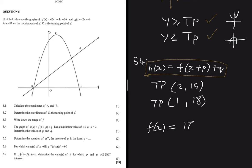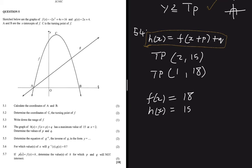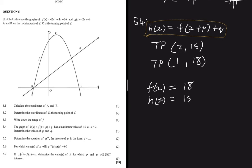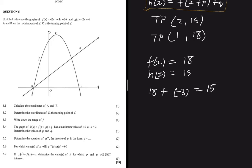The turning point y-value of f is 18, and the turning point y-value of H is 15. We need to add something to 18 to get 15, which is -3. Therefore q = -3.